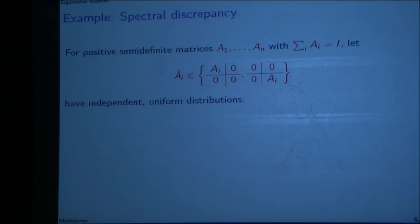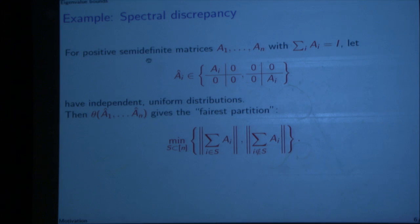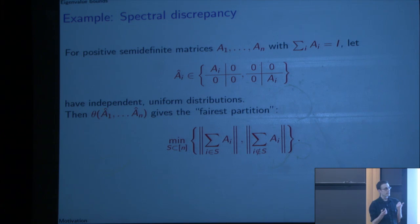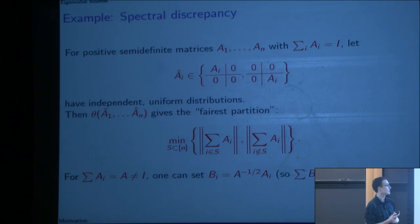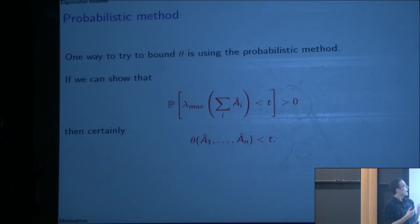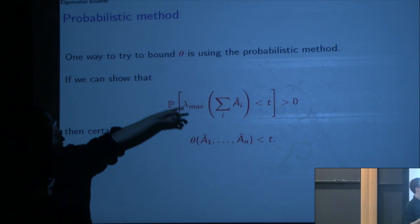There's also this concept of spectral discrepancy. If you have positive semi-definite matrices A1 through An that all sum to the identity, you can imagine giving Ai to player one or player two depending on which one wanted it. Then theta of A1 through An gives you the fairest partition — the matrices that have all eigenvalues as close to each other as possible. And the sum-to-identity condition is not a huge deal; you can account for it by multiplying by the square root of the inverse. The way I'd like to bound theta is using the probabilistic method: if I can show that the probability that lambda max of this sum is less than t is greater than zero, that means somewhere there exists one of these that achieves it.